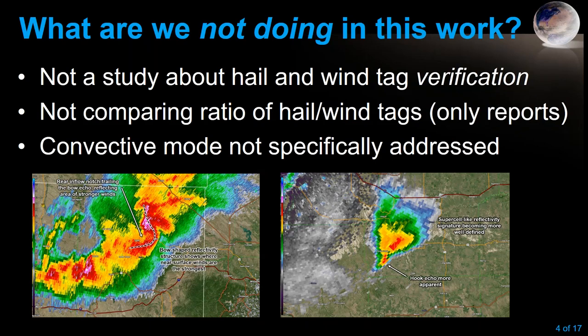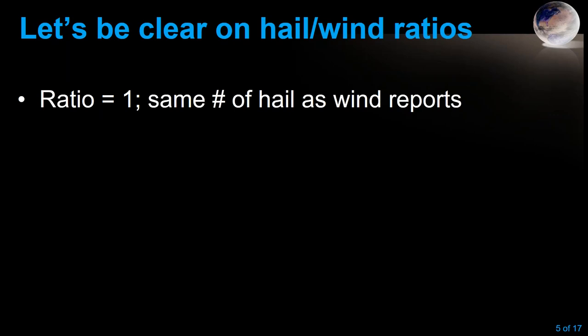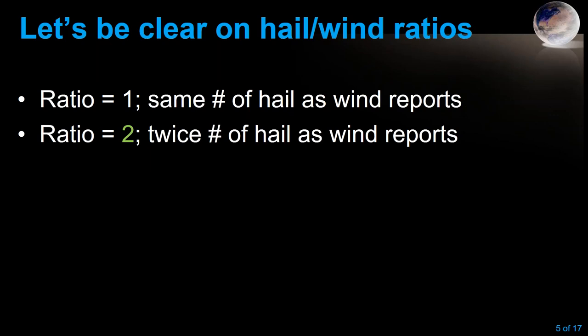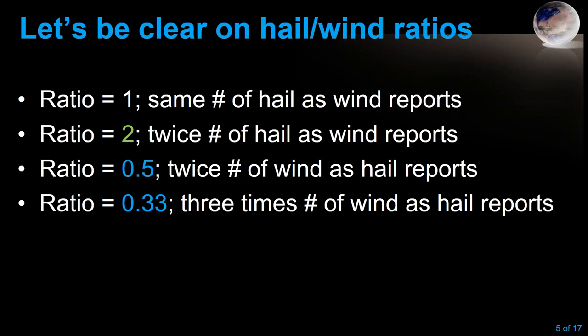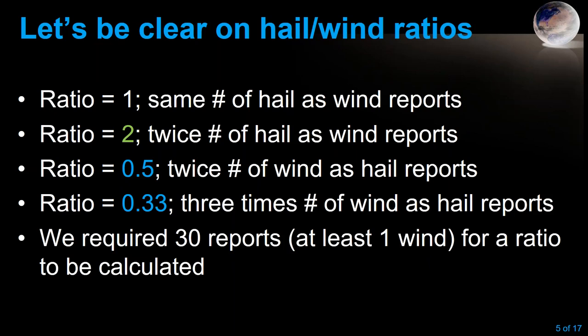To clarify what we mean by hail and wind ratios: a ratio of one means the same number of hail reports as wind reports, saying nothing about absolute numbers. A ratio of two means twice as much hail as wind; 0.5 means twice as much wind as hail; and 0.33 means three times the wind as hail. Less than one means more wind than hail. We required at least 30 reports to calculate a ratio, and at least one wind report — otherwise the ratio would be undefined.